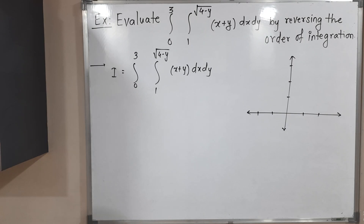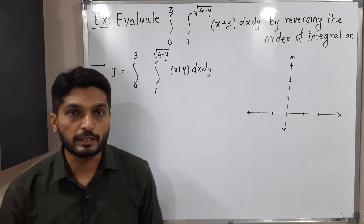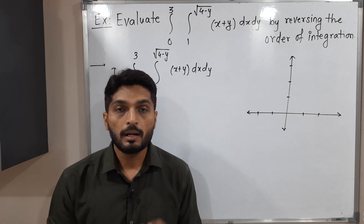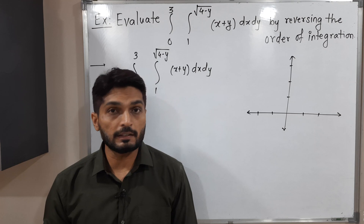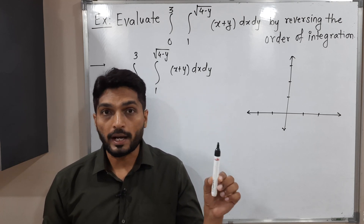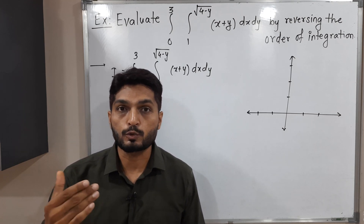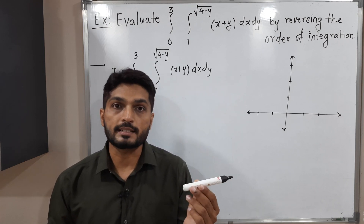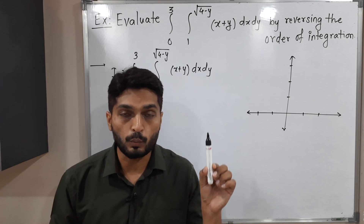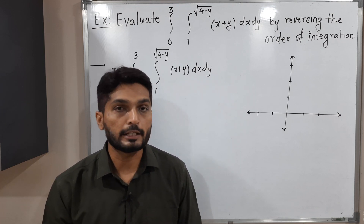Hi everyone. In this video we are going to discuss this example. We have a double integration and we have to find its value by reversing the order of integration. That means if the given strip is parallel to the y-axis, we should consider parallel to the x-axis, and vice versa.